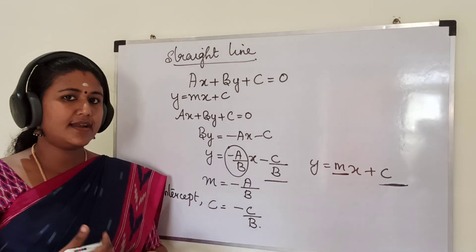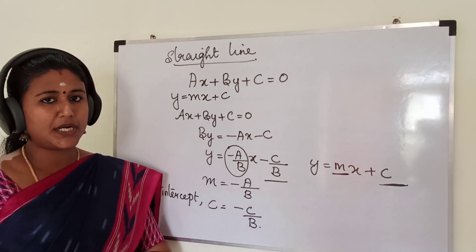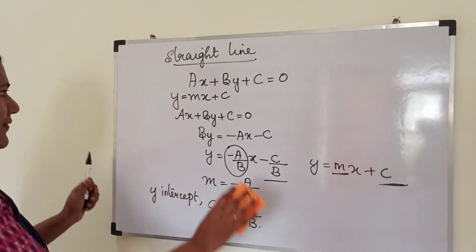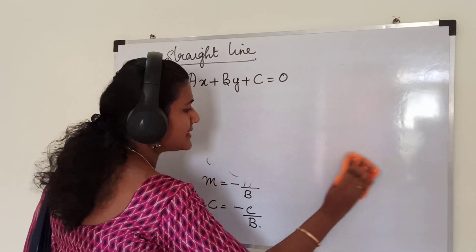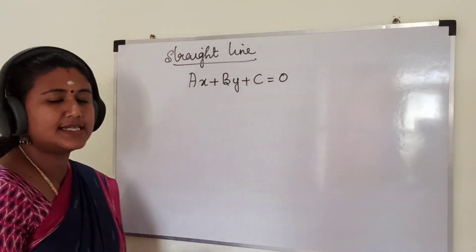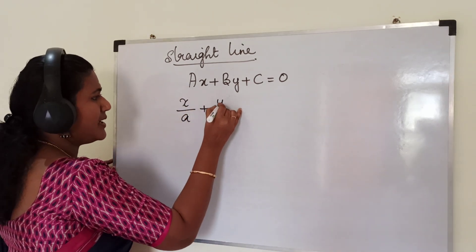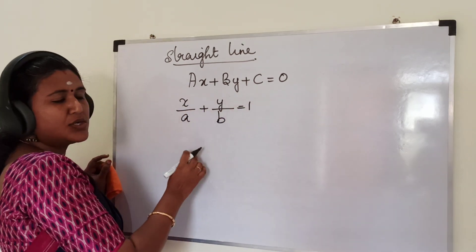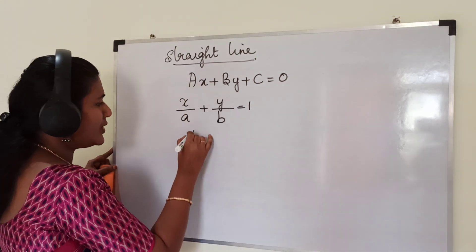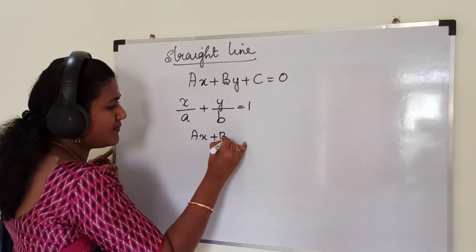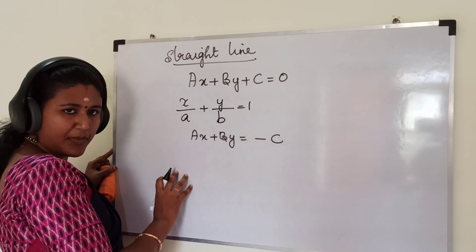Now we will move to the next one — intercept form. How can we reduce the general form into intercept form? We will consider the same general form: AX plus BY plus C equal to 0. The standard form of intercept form is X by A plus Y by B is equal to 1. We will reduce the general equation into this form. We take the constant term to the right side, then divide the equation throughout by minus C.